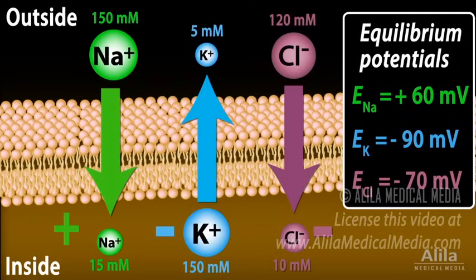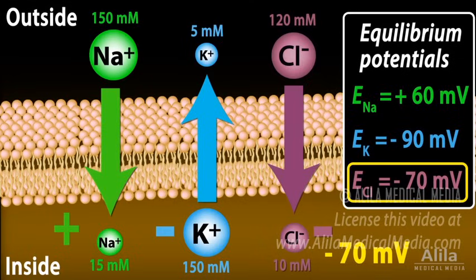The resting membrane potential of a neuron is about negative 70 millivolts. Notice that only chloride has the equilibrium potential near this value. This means chloride is in equilibrium in resting neurons, while sodium and potassium are not.